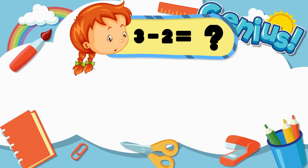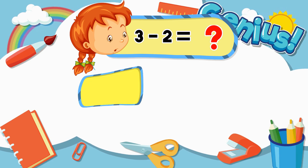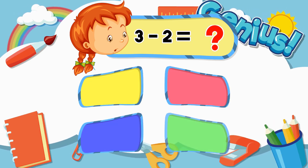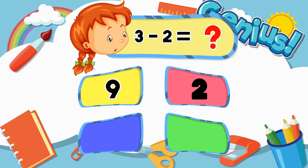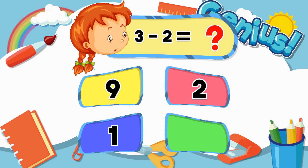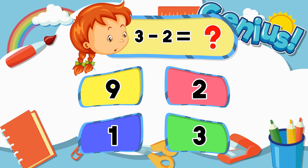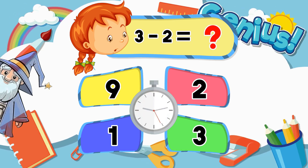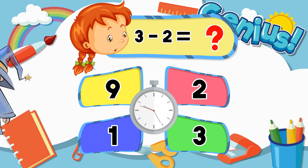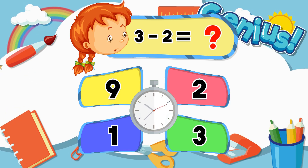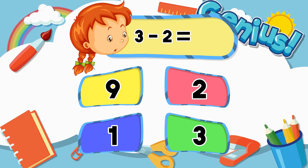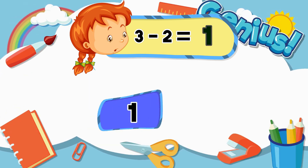What is 3 minus 2? Options: 9, 2, 1, 3. Answer: 1.